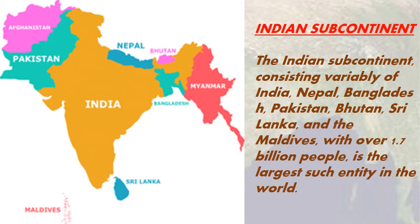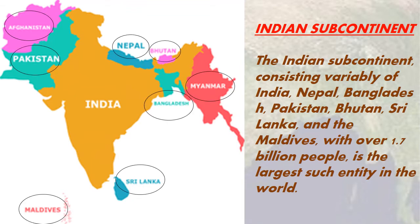India is a part of the Indian subcontinent. It forms this subcontinent along with Pakistan, Nepal, Bhutan, Bangladesh, Sri Lanka, and Maldives. It is surrounded by the Arabian Sea in the west, the Bay of Bengal in the east, and the Indian Ocean in the south.